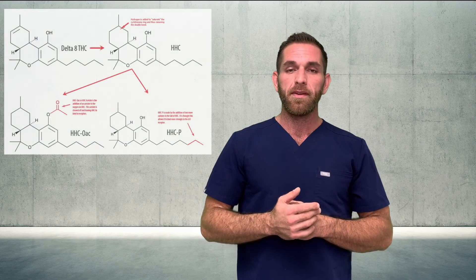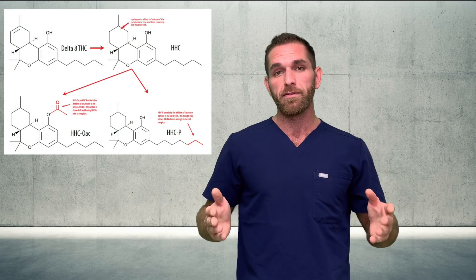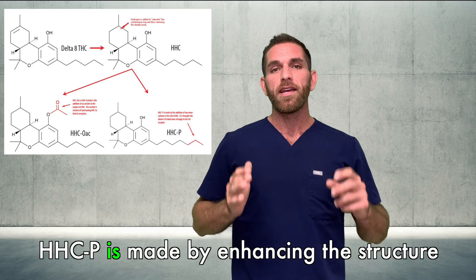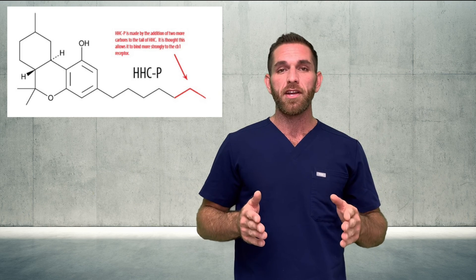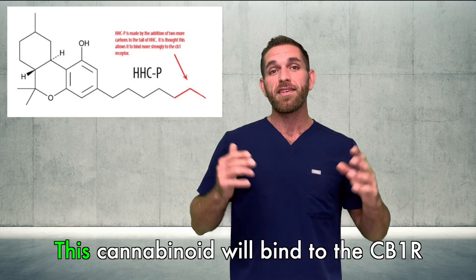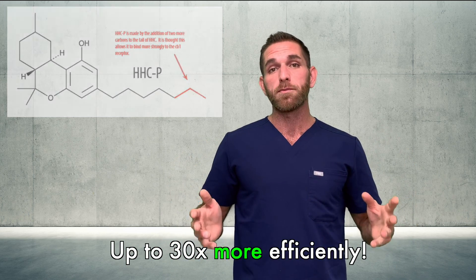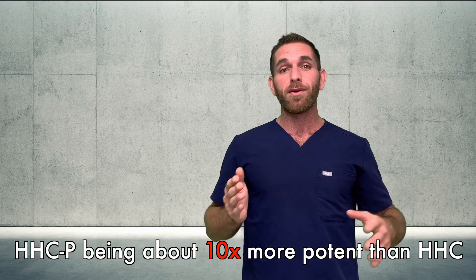So then what is HHCP? HHCP is another hexahydrocannabinol derivative, but this one is much less commonly known. HHCP is made by enhancing the structure of hexahydrocannabinol's 5-carbon sidechain — specifically, we're adding 2 carbons to that sidechain. This causes the cannabinoid to bind to the CB1 receptor up to 30 times more efficiently, leading to HHCP being about 10 times more potent than normal hexahydrocannabinol. Anecdotal evidence describes HHCP as much stronger than delta-9-THC.